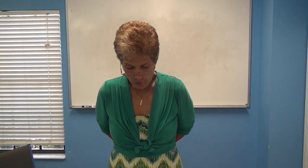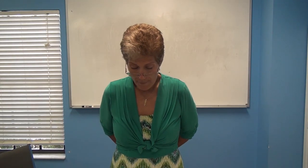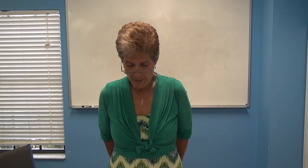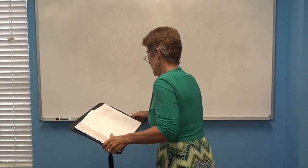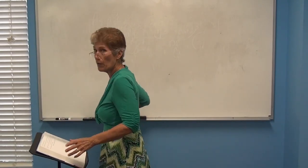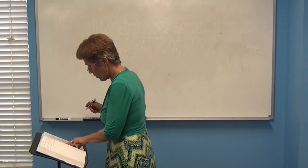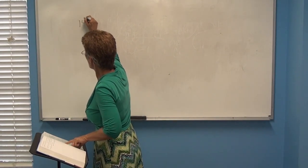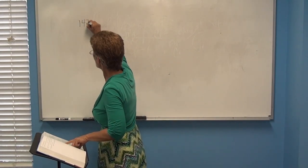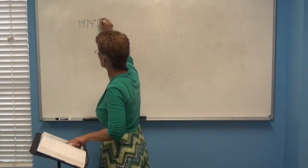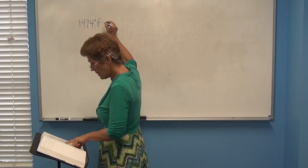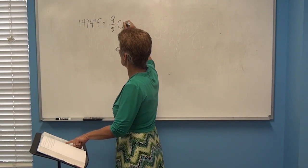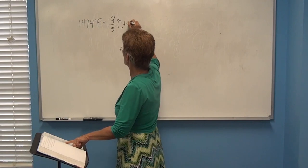Number three: table salt, sodium chloride, melts at 1,474 degrees Fahrenheit. What is the temperature in Celsius? We have 1,474 degrees Fahrenheit and we want to know what that is in Celsius. The formula is: F = (9/5)°C + 32.